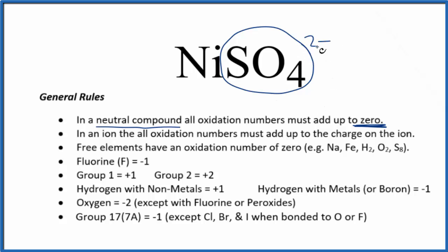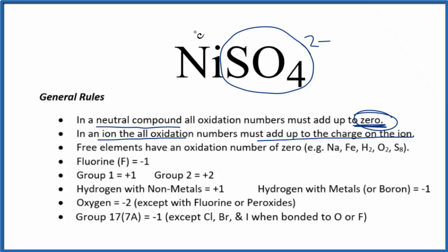So as we look at the sulfate, it's 2-minus. When we have an ion, all the oxidation numbers add up to the charge on the ion. So if you add the oxidation numbers on the sulfur and the 4 oxygens, you'll get minus 2. That means for everything to add up to zero, we have to have a plus 2 oxidation number on the nickel. And that's why we call it nickel 2 sulfate.